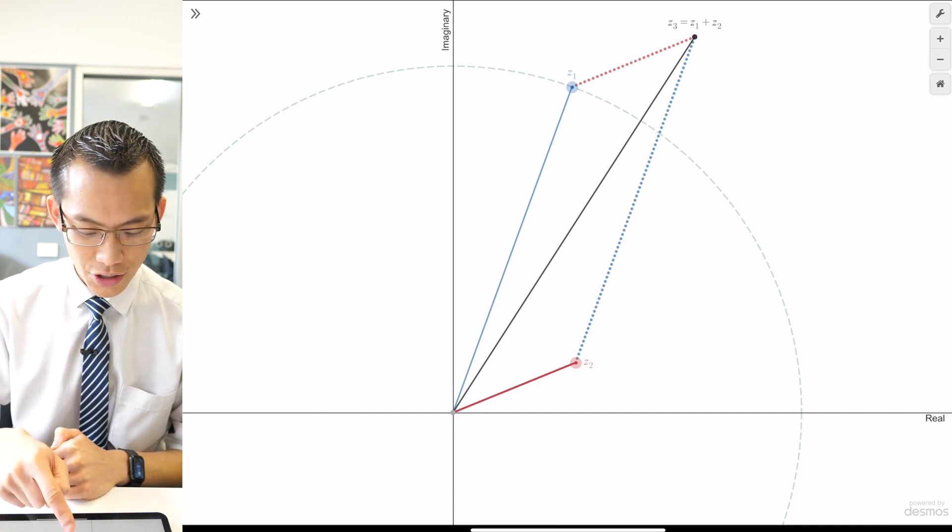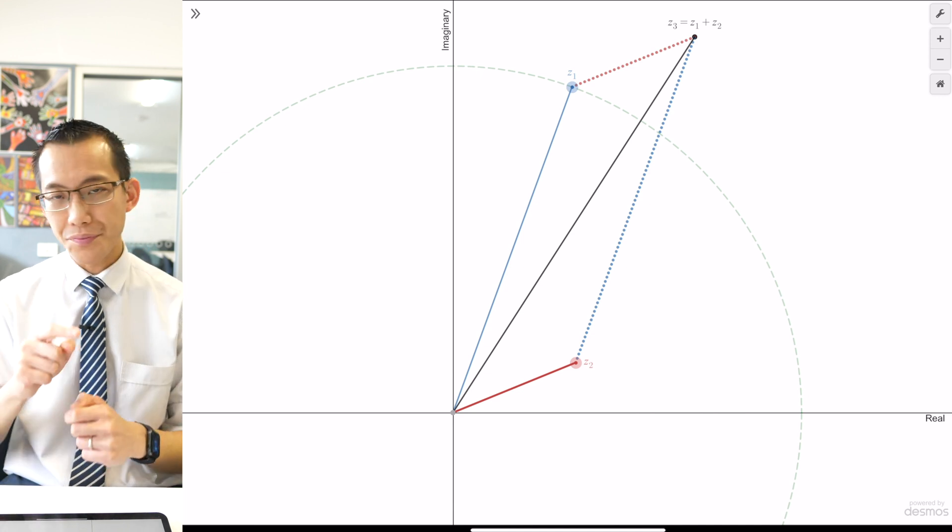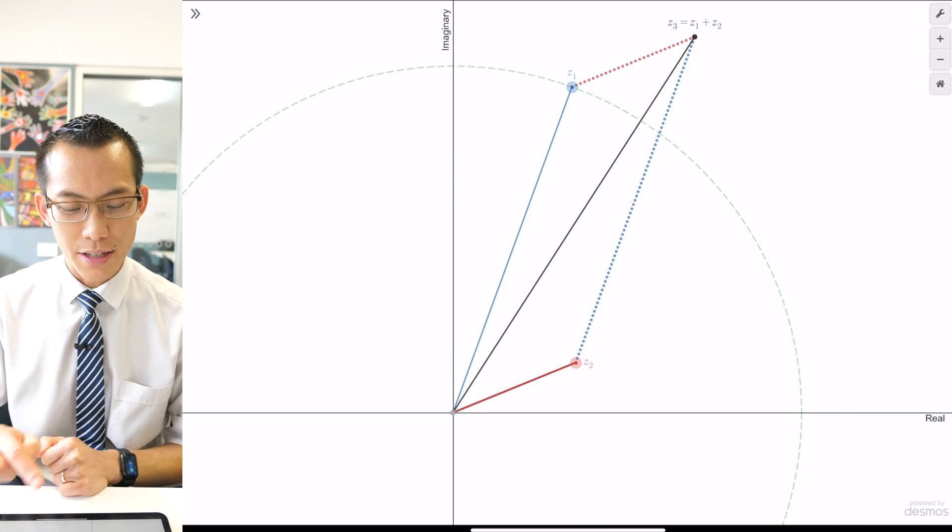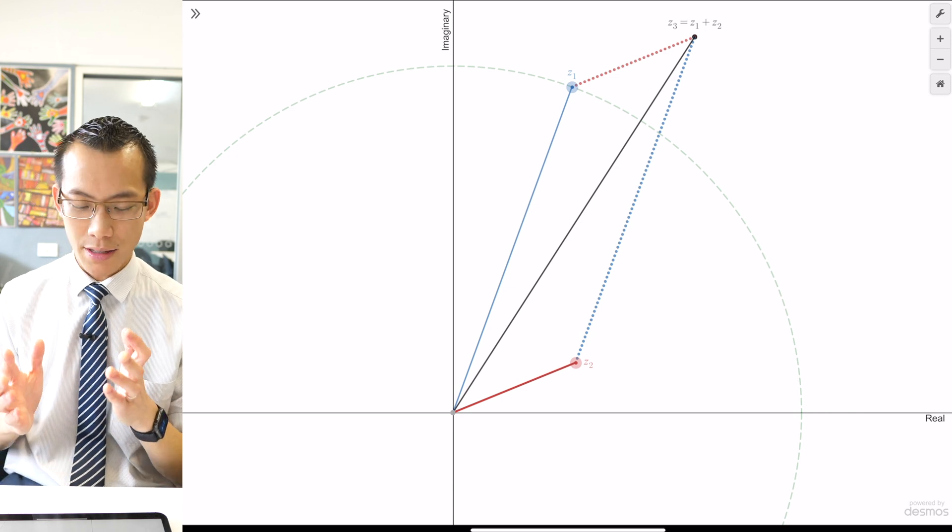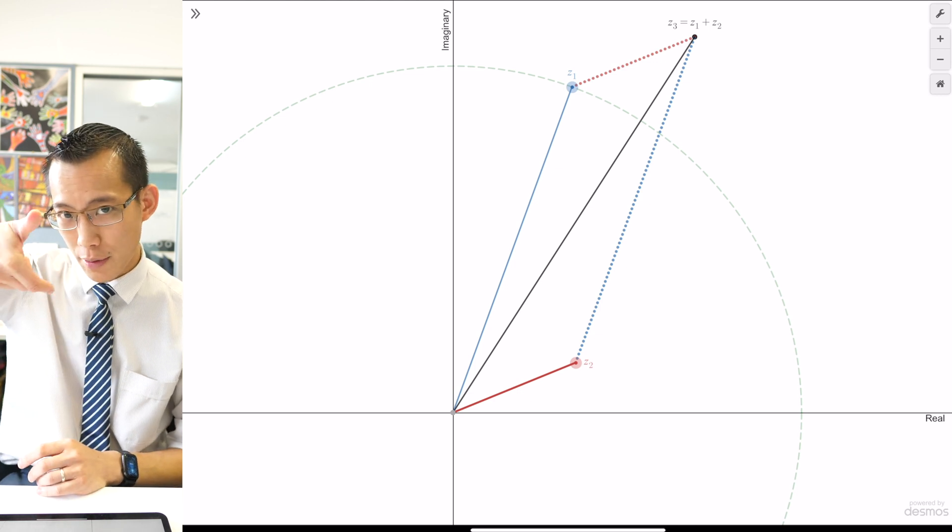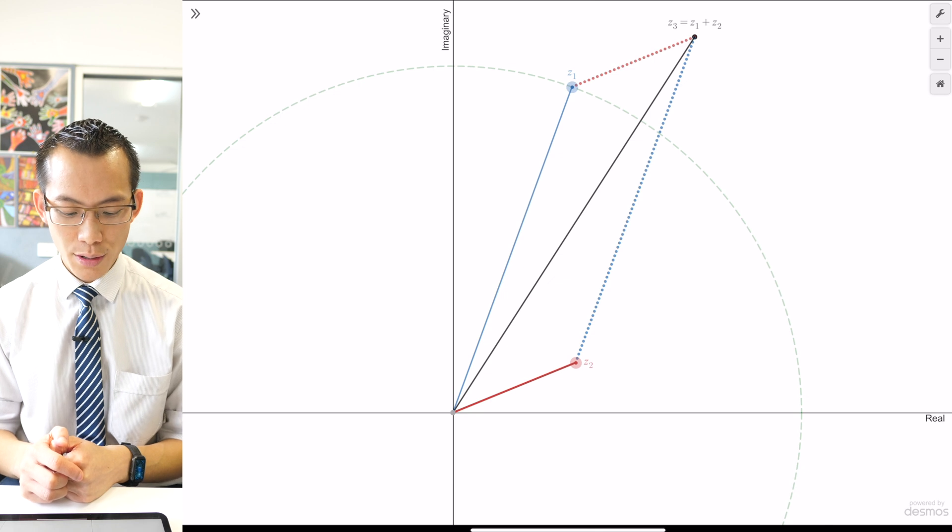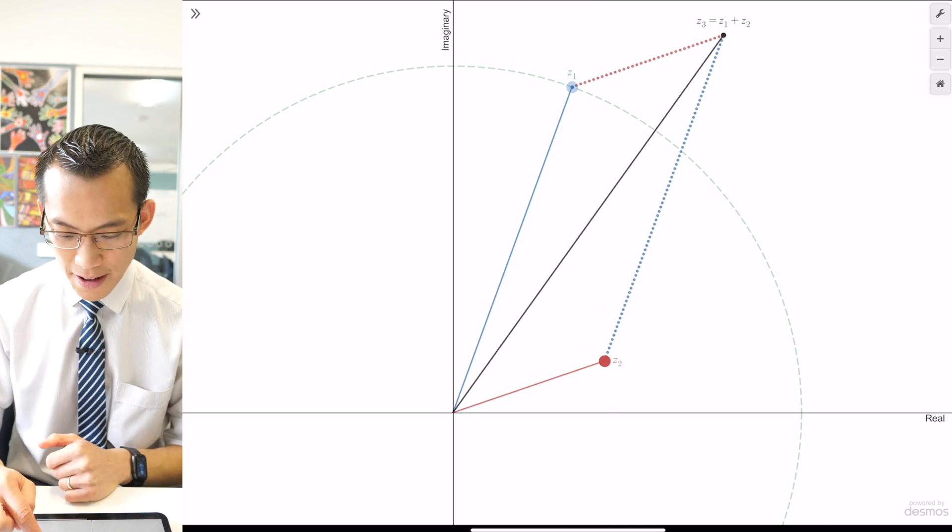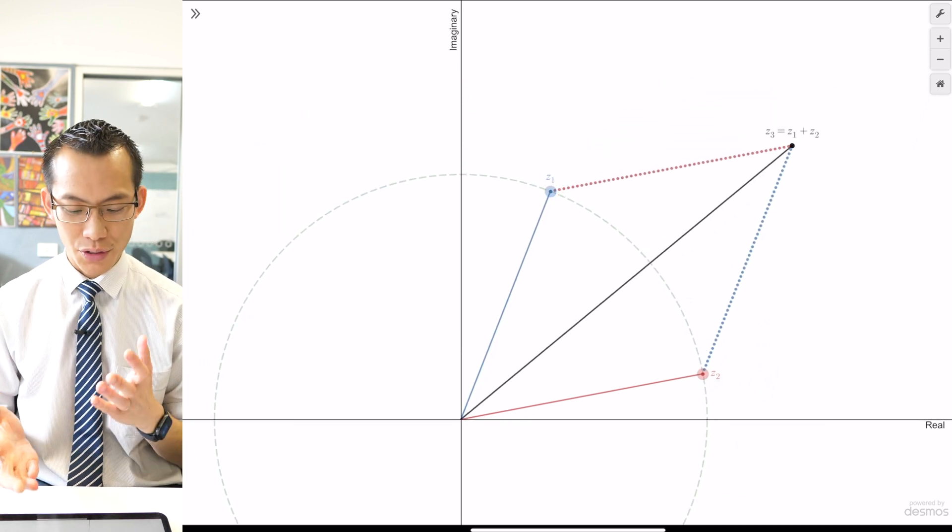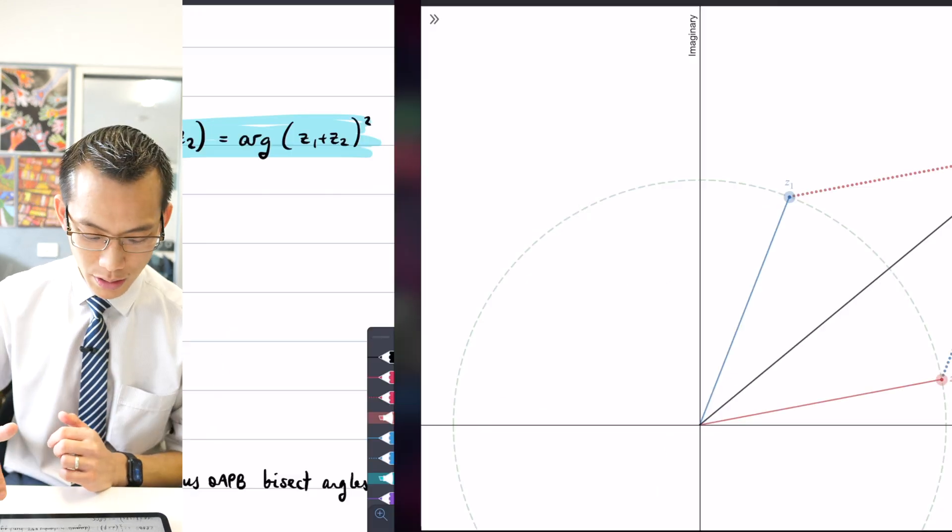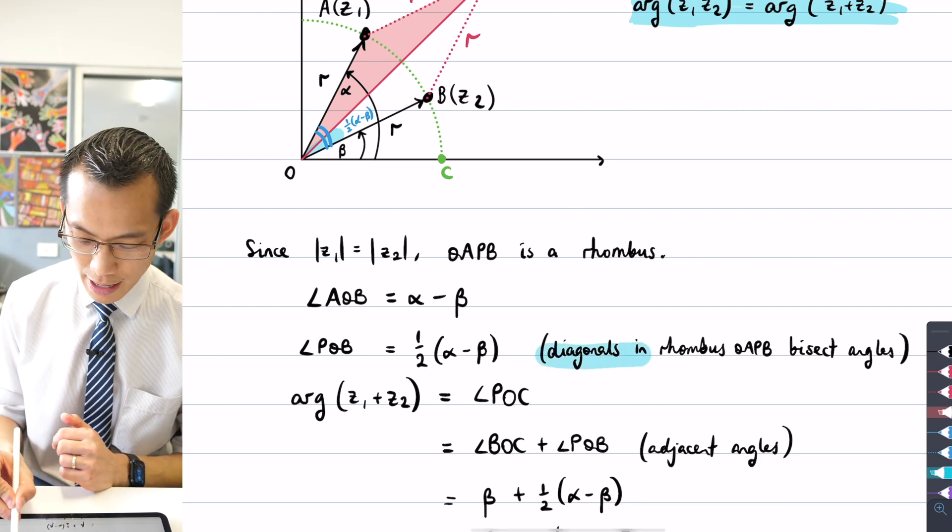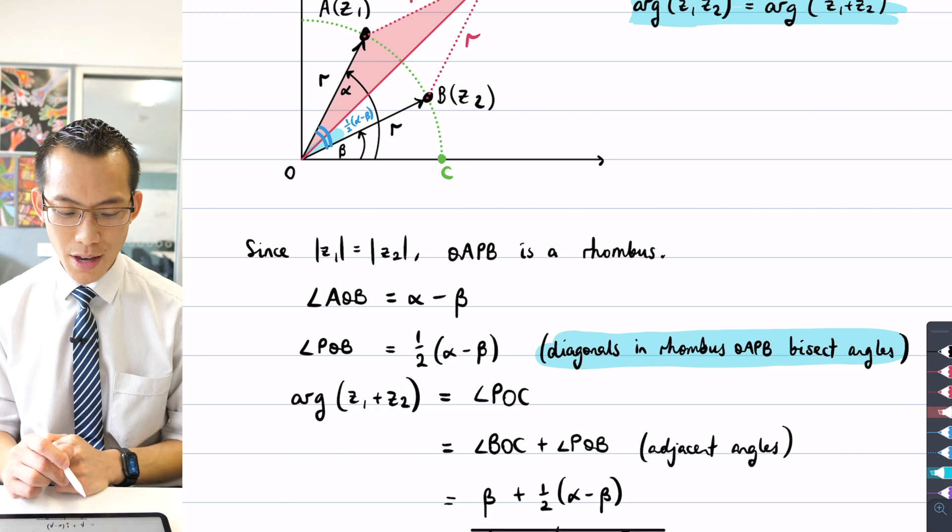You can see here my angle from Z1 to the origin over to Z1 plus Z2. You can see that angle is not the same as the angle from Z2 to the origin up to Z1 plus Z2. One of them is much narrower than the other. You're not getting a bisection of angles happening anymore. So this bisection only happens when Z1 and Z2 share the same modulus. That's what makes the construction work.